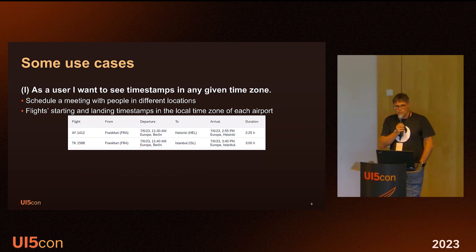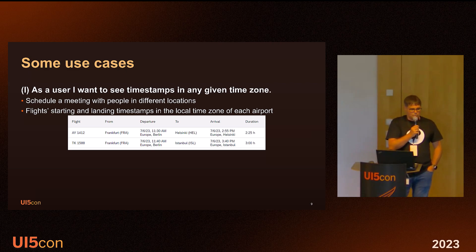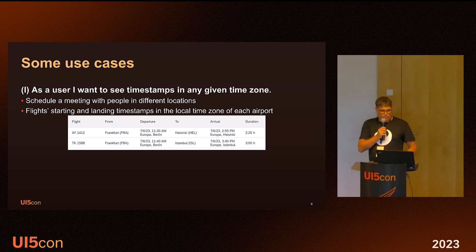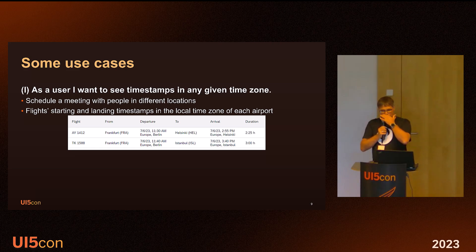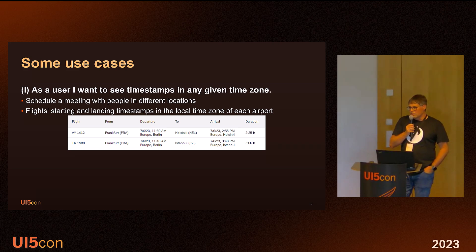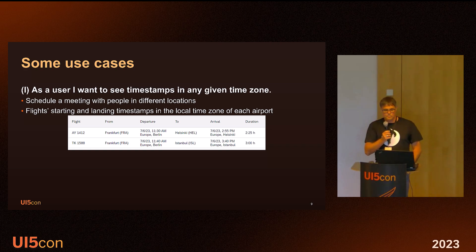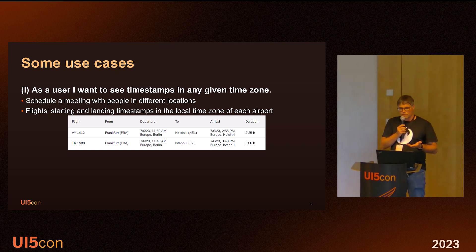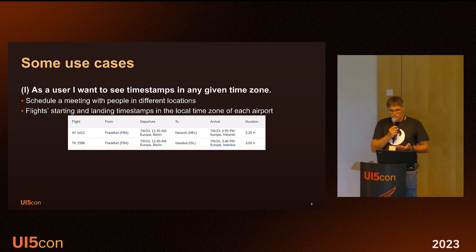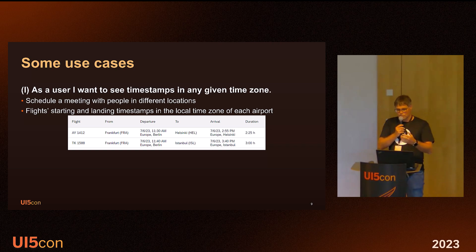The first use case we had in mind: as a user, I want to see a timestamp in a given time zone. For example, when scheduling a meeting, I want to see the timestamp in my location, and if I invite people from other locations I may want to see the timestamp in their location too — to check whether it fits in their working hours. Another example is a flight booking system: I want to see departure and landing timestamps in the specific time zone of the airport, for example Frankfurt departure at 11:30 and landing at 2:55 in Helsinki time.